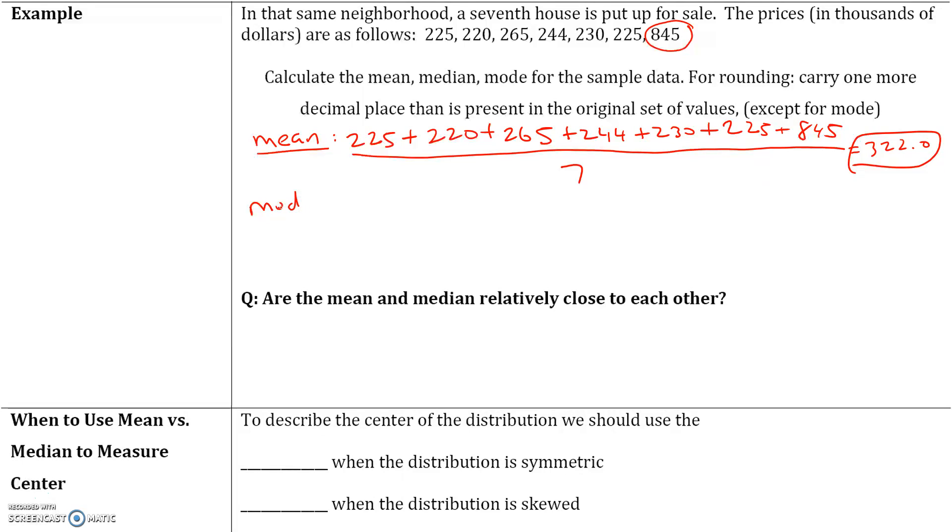Now let's look at our median. For the median, we have to put this in ascending order, smallest to largest. So we have 220, then two 225s, then 230, then 244, then 265, and then 845, the outlier. Now because our data set has an odd number of values, we're going to look at the middle value, which is 230.